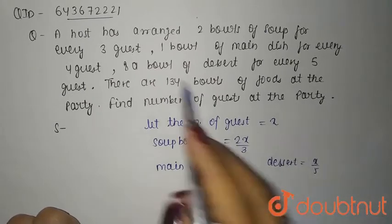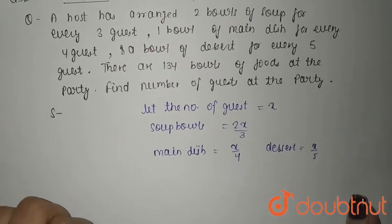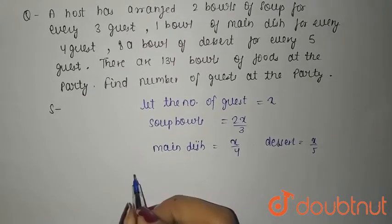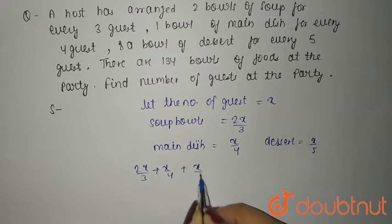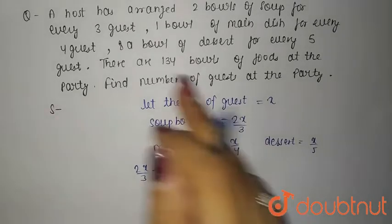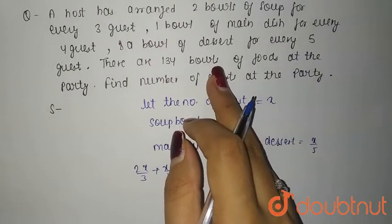And for dessert it's again x by 5, because a bowl of dessert for every five guests. So adding up we have 2x by 3 plus x by 4 plus x by 5 equals to 134, because total number of bowls are 134.